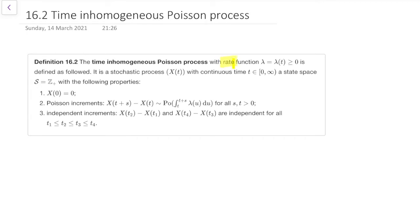So let's look at where it's different. The first thing is that we have this rate function lambda of t. So now we don't just have a rate constant lambda, we have a rate function lambda of t that can change over time.